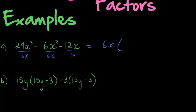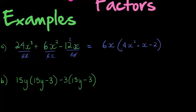Then I divide each term by 6x to see what remains. One x cancels with one x, and 6 divides into 24 four times, leaving 4x². One x was taken from the 3x², leaving 2x. 6 divides into 6 once, leaving x. Finally, 6 divides into 12 twice, giving negative 2, and the x's cancel, leaving just 1. So the expression is fully factorized.